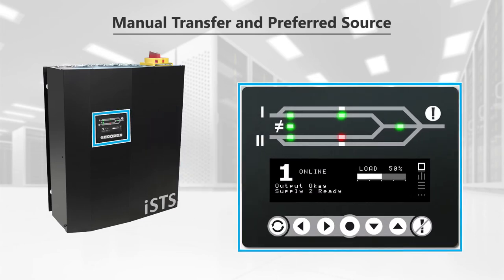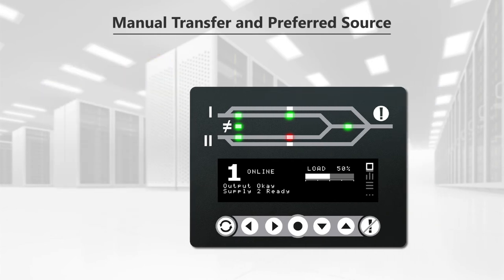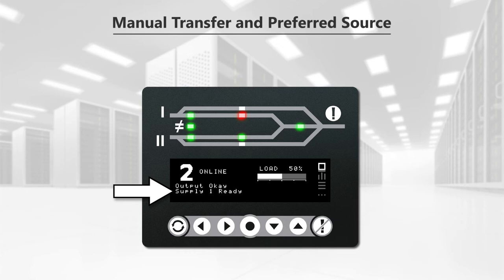Conveniently perform manual transfers and set a preferred source using the preferred source selection button on the user interface. Set the preferred as Source 1, Source 2, or no preference. The STS will default to the preferred source when it again becomes available.